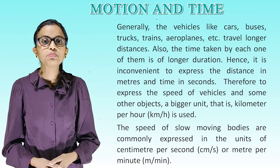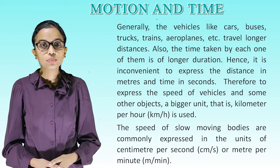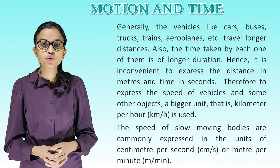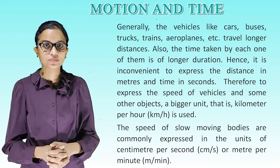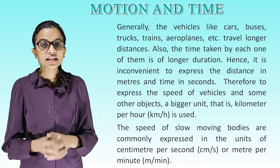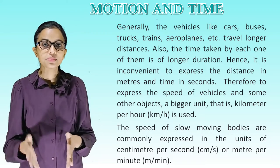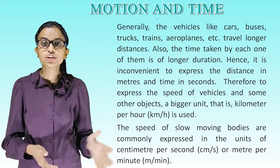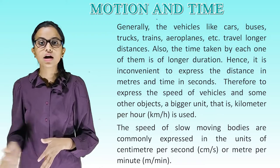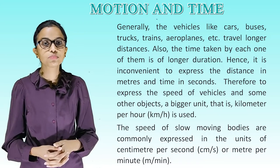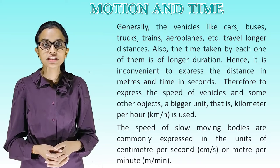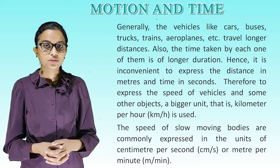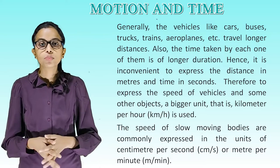Generally, the vehicles like cars, buses, trucks, cranes, aeroplanes etc. travel longer distances. Also, the time taken by each one of them is of longer duration. Hence, it is inconvenient to express the distance in meters and time in seconds. Therefore, to express the speed of vehicles and some other objects, a bigger unit, that is kilometer per hour, is used. The speed of slow moving bodies are commonly expressed in the units of centimeter per second, that is CM slash S, or meter per minute, that is M slash MIN.